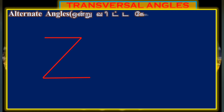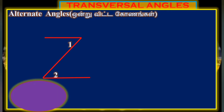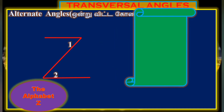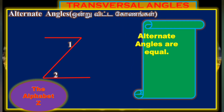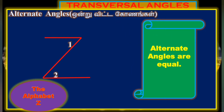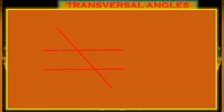We can find it in transversal angle: alternate angle. This is the shortcut. Alternate angle is the Z angle — meaning the Z angle is the one angle shape. That means the corner forms the Z angle. The first line and second line form the interior opposite angle.